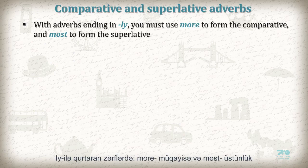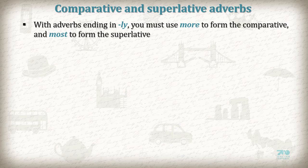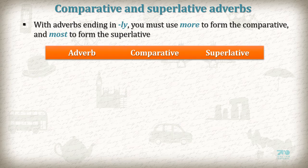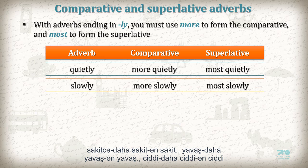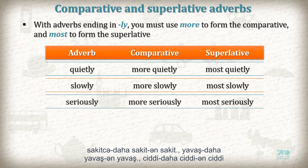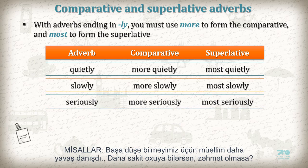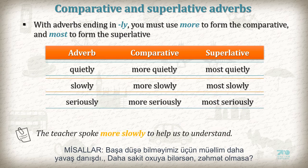Comparative and superlative adverbs: with adverbs ending in -ly, you must use 'more' to form the comparative and 'most' to form the superlative. For example: quietly → more quietly → most quietly; slowly → more slowly → most slowly; seriously → more seriously → most seriously. Examples: 'The teacher spoke more slowly to help us understand.' 'Could you sing more quietly, please?'